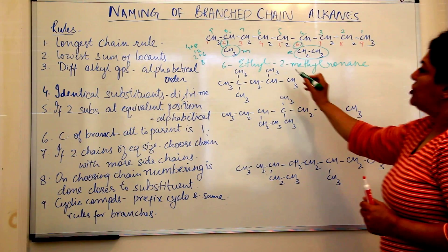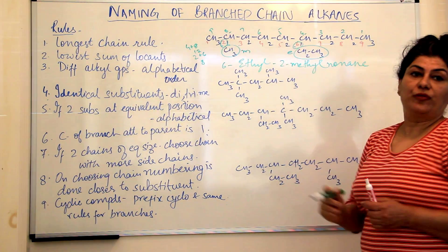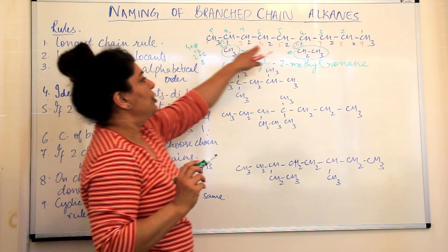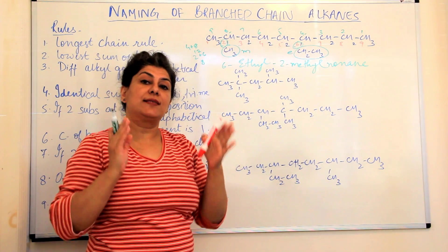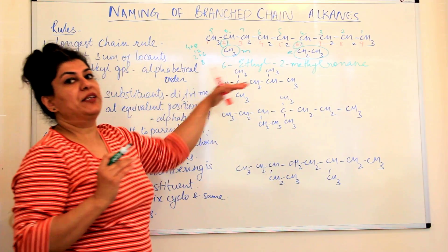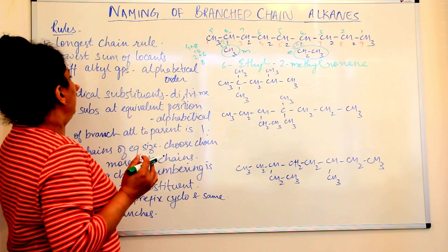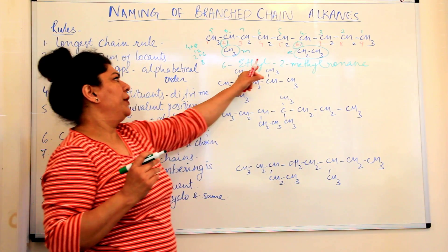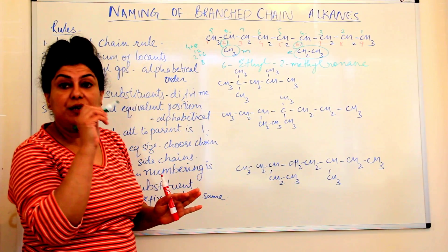The hyphens are used to separate the locant numbers from the names of the substituents. So to summarize: first we chose the longest chain; second we assigned locants so their sum is minimum — the direction giving the lower sum of locants is chosen; third, if there are different alkyl groups they are written in alphabetical order, with the locant written before each substituent's name separated by a hyphen.